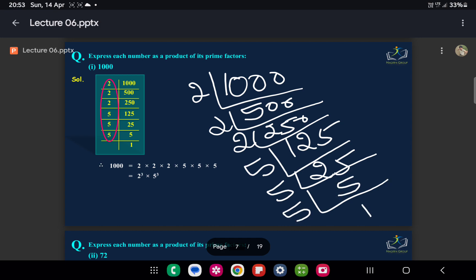So we get 2 × 2 × 2, and 5 is repeated three times, giving us 5 × 5 × 5. At the end, you can write this as 2³ × 5³. This is the prime factor method.